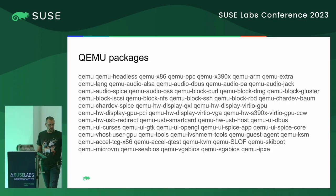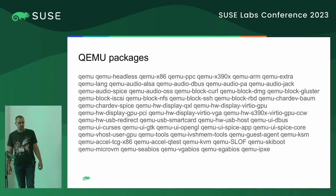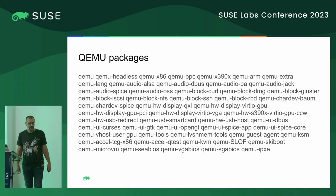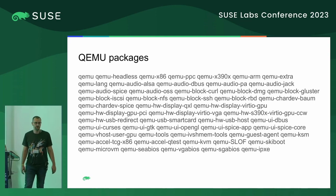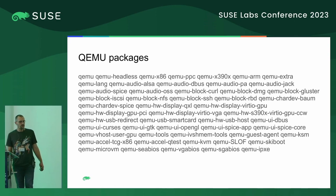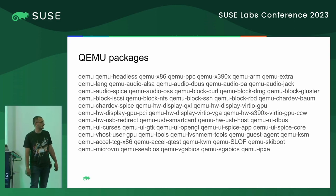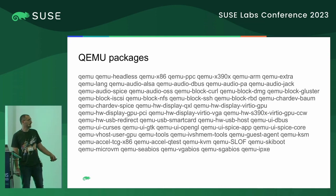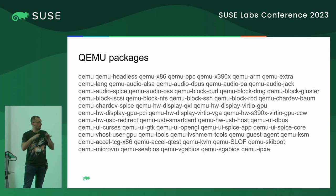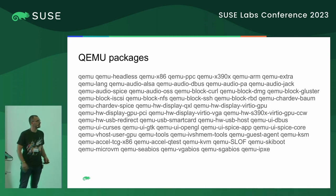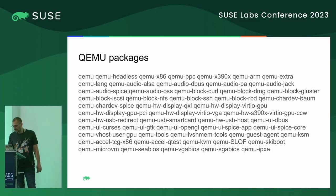I'm going to cover the first part, which will be about QEMU. One problem — maybe the biggest one — with QEMU is that there are a lot of packages related to it. This is a probably non-comprehensive list of the actual sub-packages of the QEMU package itself, but then there are dependencies, and it tends to be difficult to handle.